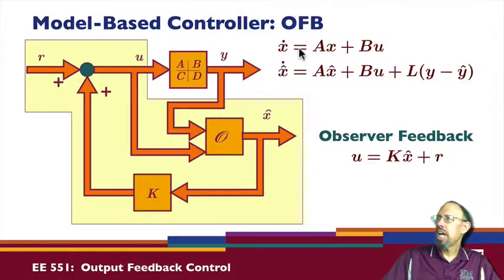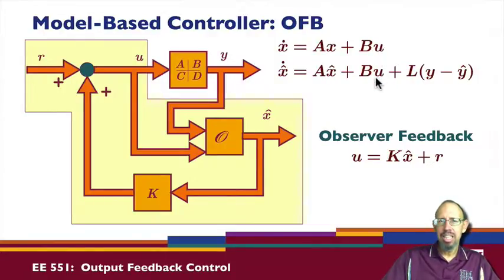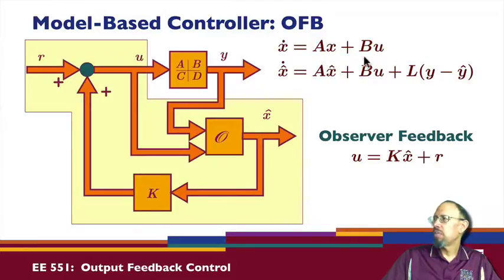When we designed the observer, we didn't specify what u was going to be — now we are. When we check the error dynamics, the u terms cancel in the error since the same control signal is used in both, so it didn't matter what the control signal was. In this case, the estimate of the state will still follow correctly even though we've now specifically chosen a control law.